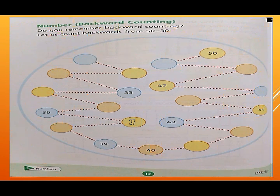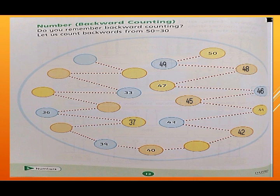Now let's solve book page number 12, backward counting from 50 to 30. You can see 50 is already written here. Before 50 we always write 49, then 48, and again 47 is written here. Then before 47 we always write 46, then 45, 44, and 43 is already written here. Then before 43 we will write 42, then 41, 40, 39, then 38.